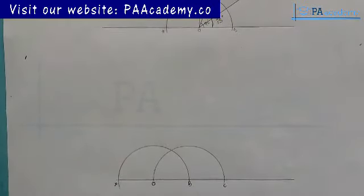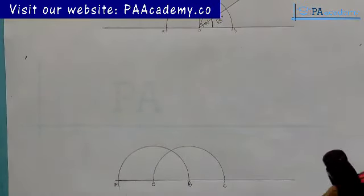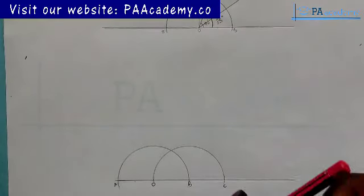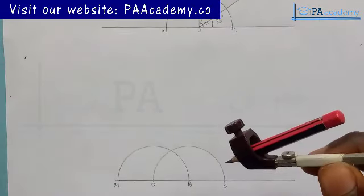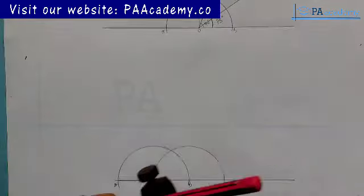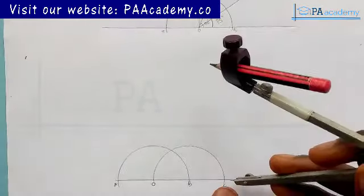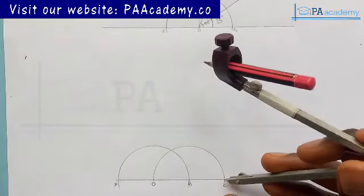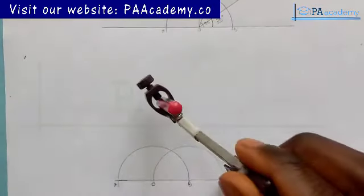Now what I want to do is adjust your compass. From point B now, you can adjust it just to any length. Draw an arc.